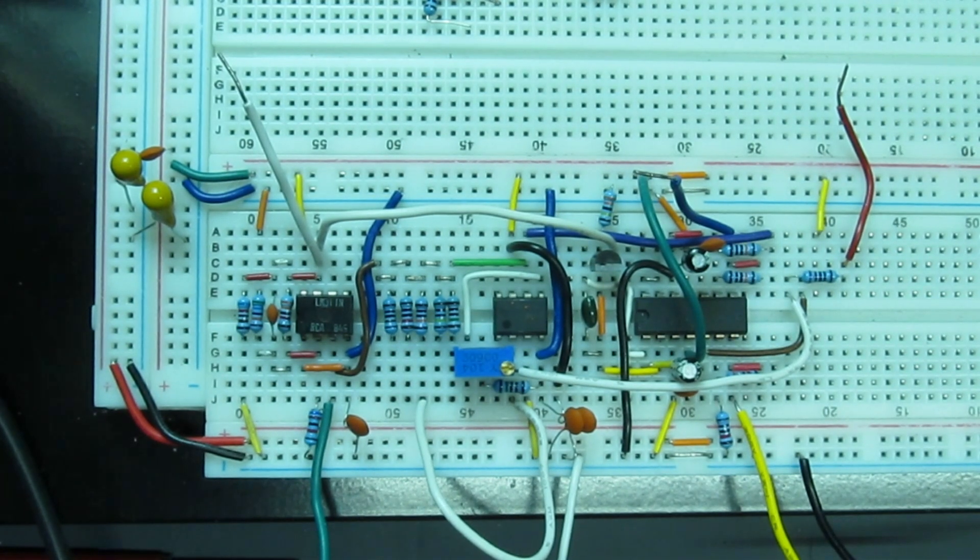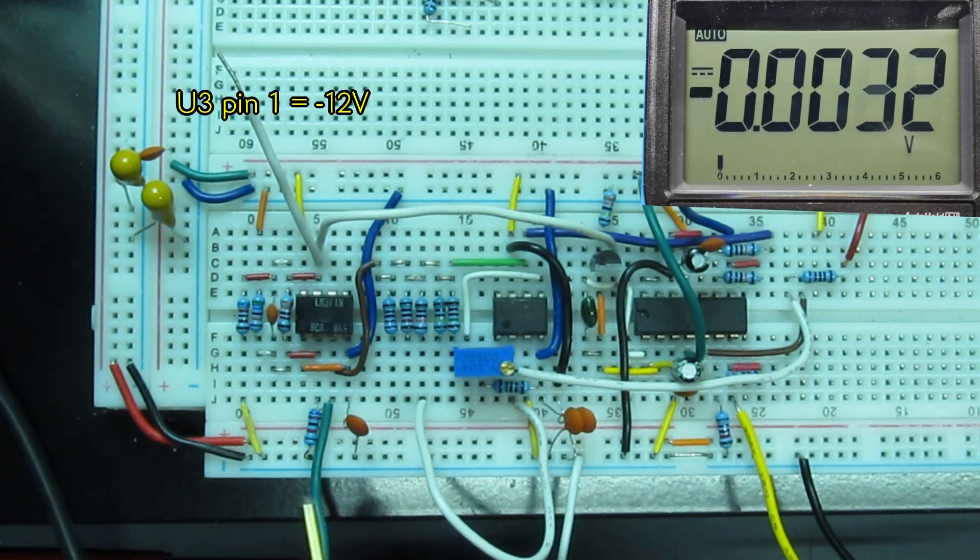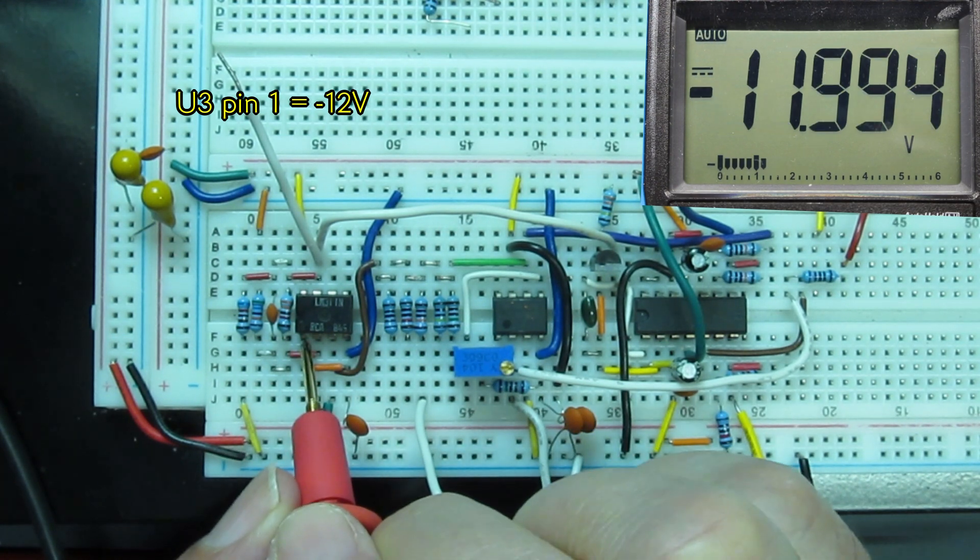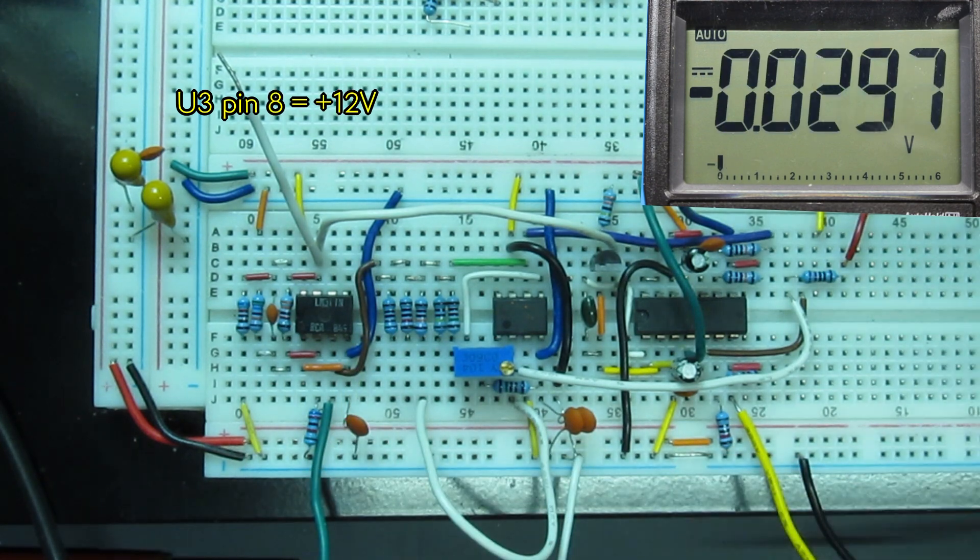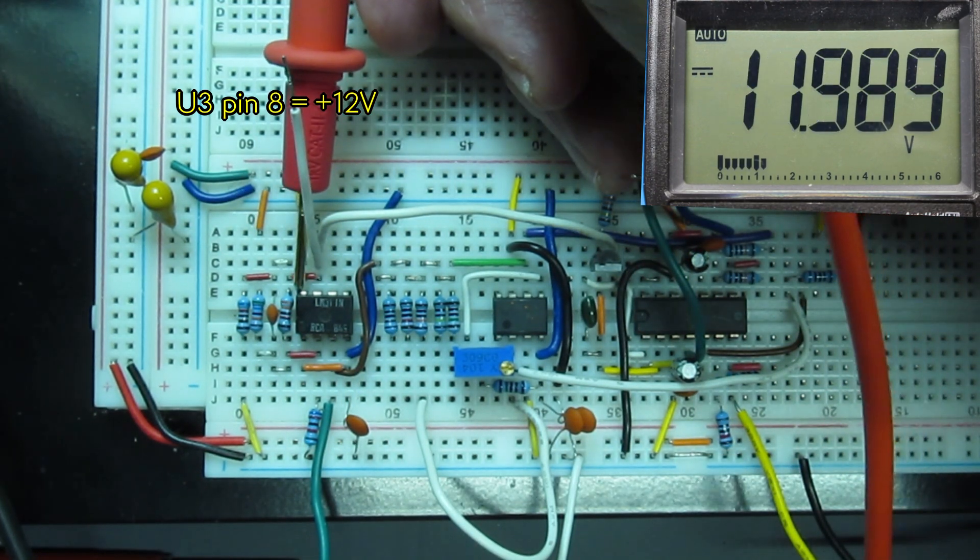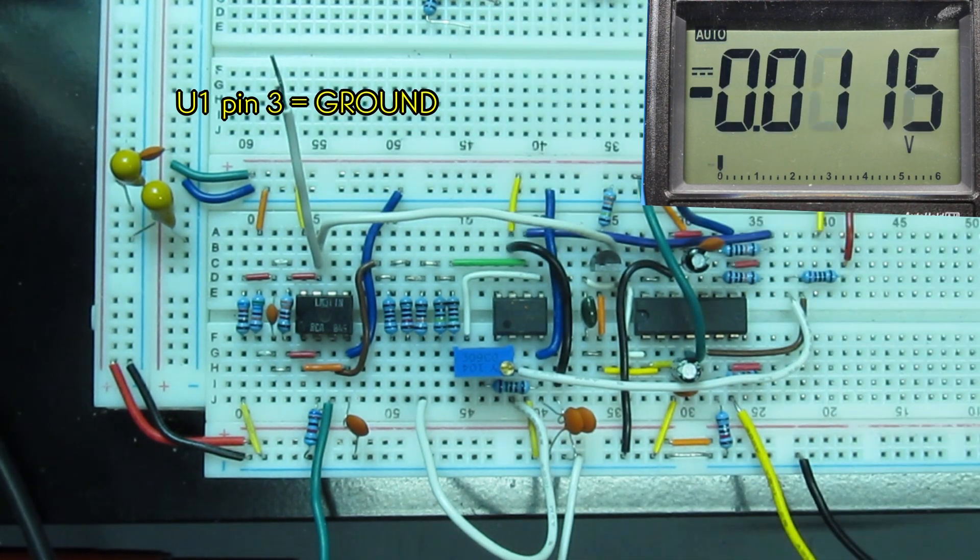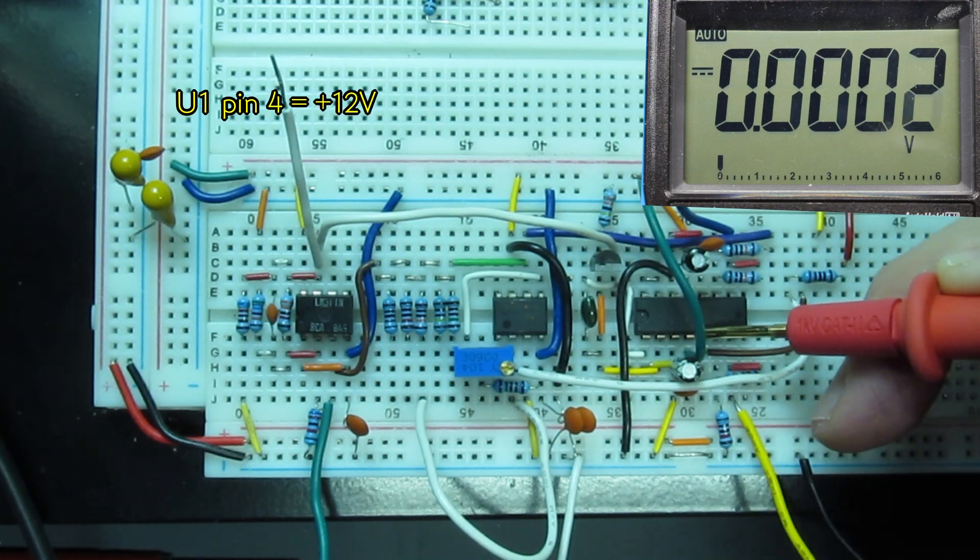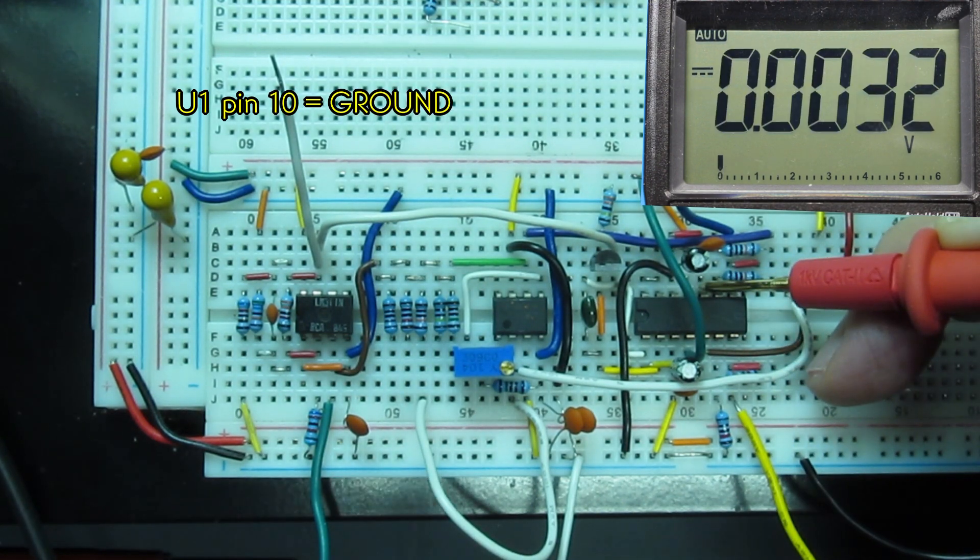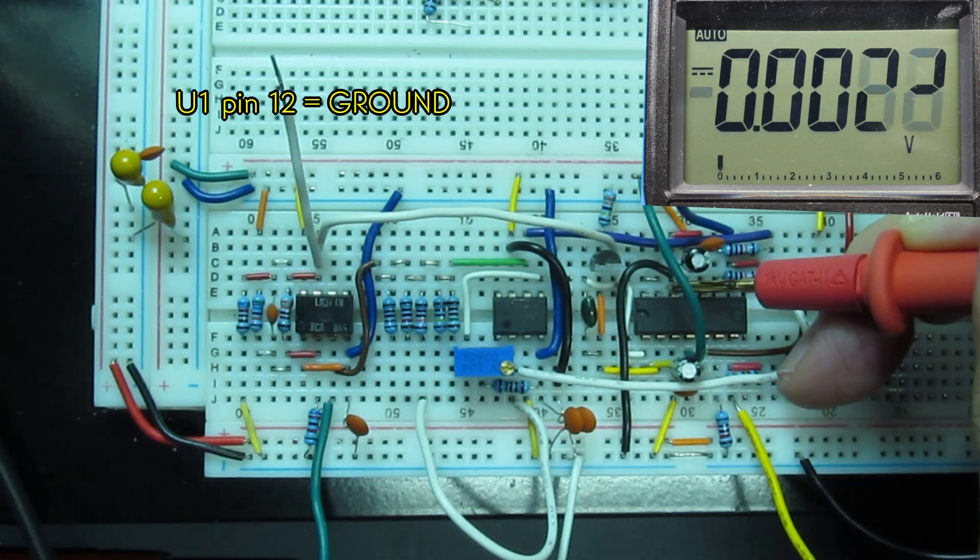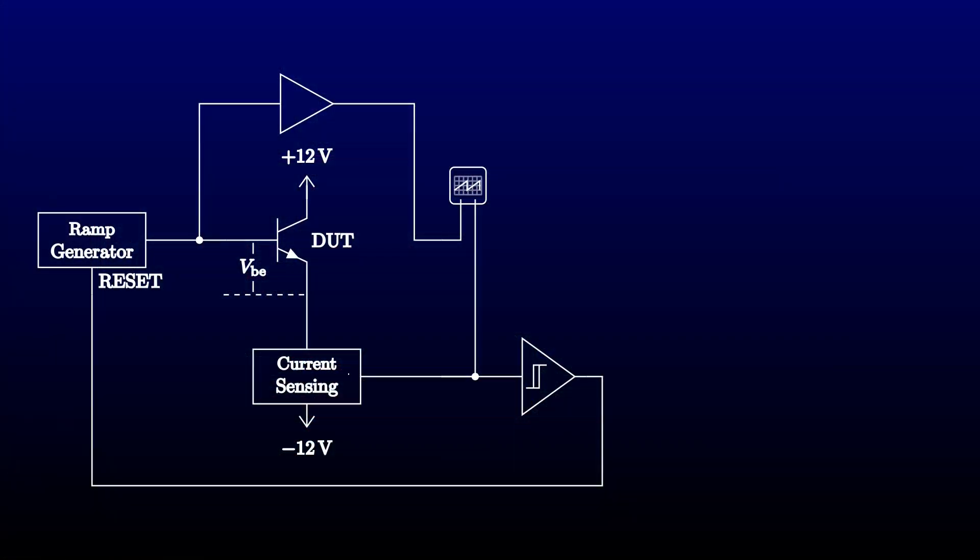I have it built up on the breadboard here. The first thing I want to do is check that all the power and ground pins are at the correct voltages. If I were using expensive ICs, I'd do that before plugging them in. But these are cheap, and I've limited my power supply to 50 milliamps, which a lot of simple devices will survive even when wired backwards.